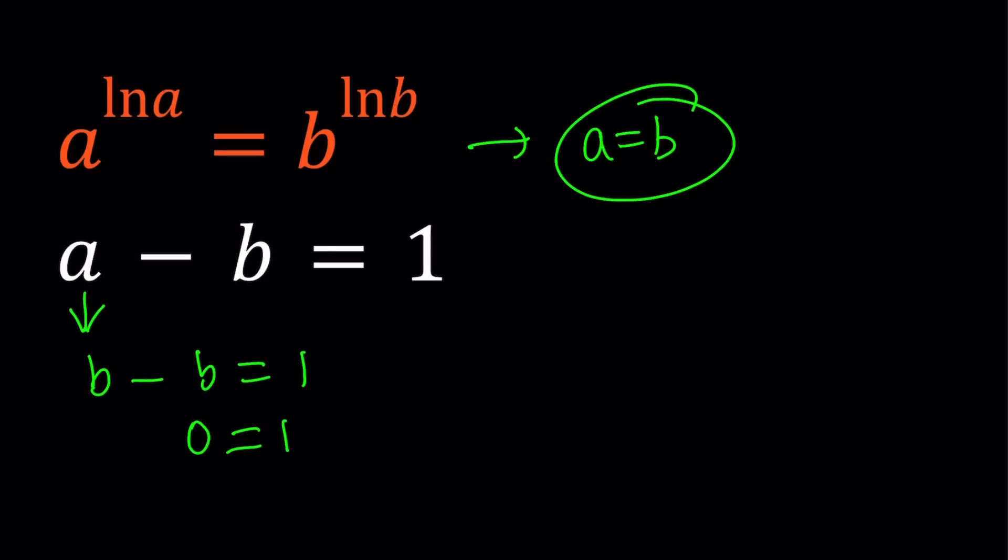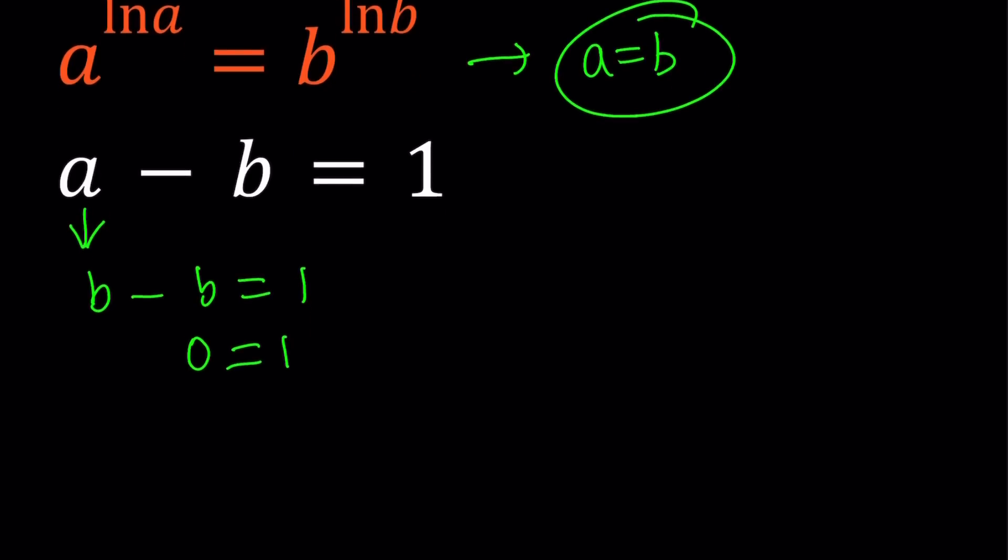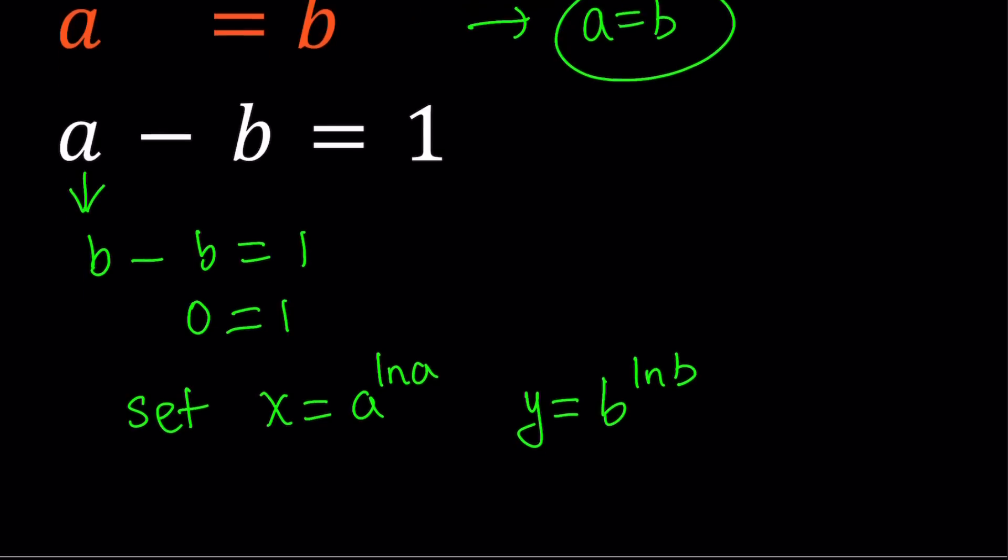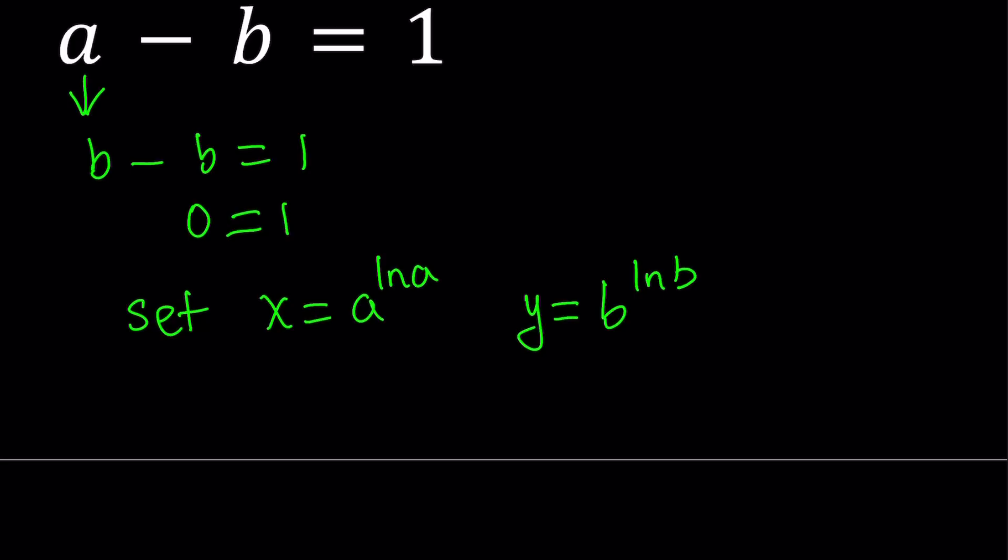Let's check it out. So here's what I'm going to do. I'm going to go ahead and set x equal to a to the power ln a, and y equal to b to the power ln b. And then, notice that here, since we have the natural log of a and natural log of b, a and b both have to be positive in order for those functions to be defined.